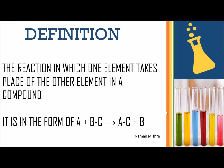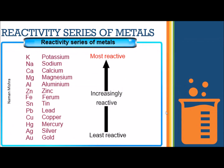I will explain the reactivity series in the next slide. This is the reactivity series of metals. As you can see: K (potassium), Na (sodium), Ca (calcium), Mg (magnesium), Al (aluminium), Zn (zinc), and Fe (ferrum) — these seven elements are most reactive. Whereas Sn (tin), Pb (lead), Cu (copper), Hg (mercury), Ag (silver), and Au (gold) are less reactive.